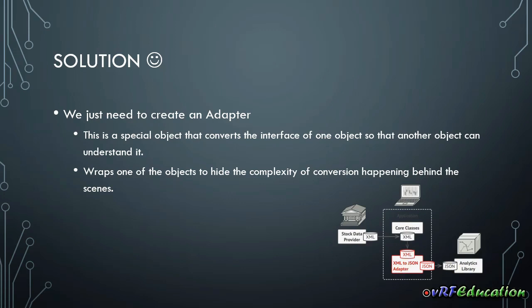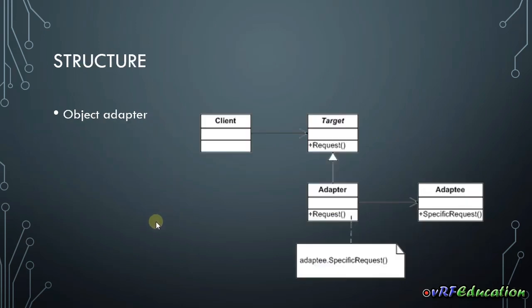We have two different ways to implement adapter patterns in our application, and this directly depends on what programming language you are using. If you use languages such as C# or Java that support single inheritance, you need to use an object adapter. On the other hand, if you use languages such as C++ that support multiple inheritance, you can use a class adapter. We are going to talk about both in detail.